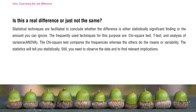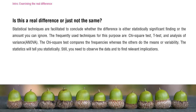There is a Korean proverb, 도토리 키즈기, which implies that the compared things are more or less the same. For the following three weeks, we are going to cover the statistical techniques used to conclude whether a difference is statistically significant or an amount you can ignore. The frequently used techniques for this purpose are chi-square test, t-test, and analysis of variance, or ANOVA. The chi-square test compares frequencies, whereas the others compare means or variability.